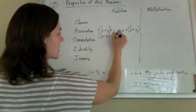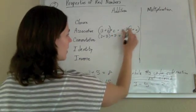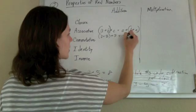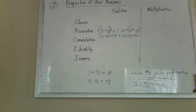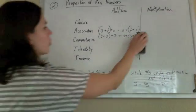If you have 3 plus 5 plus 7, that's the same thing as 3 plus 5 plus 7. Right? So, no big deal there.